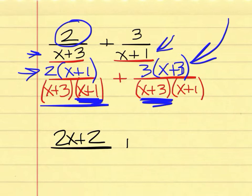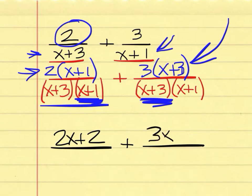And what would I get if I simplified the right-side numerator and distributed the 3 through (x plus 3)? Blake — Johnson — three x plus nine is right. Three x plus nine.